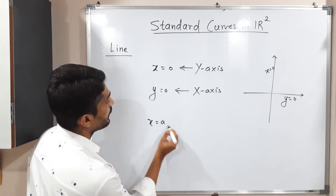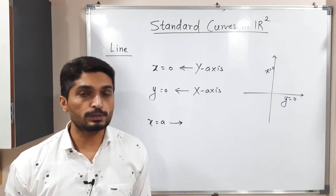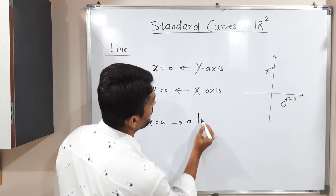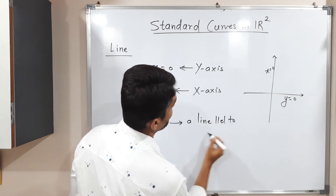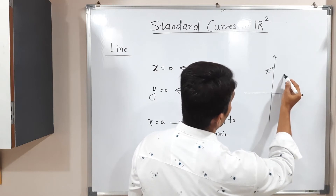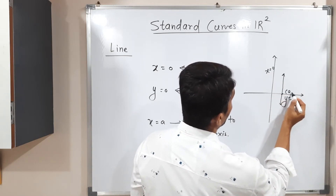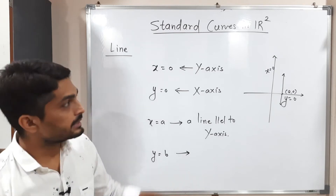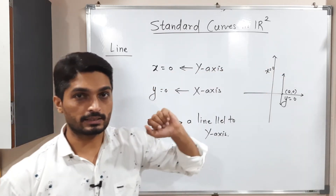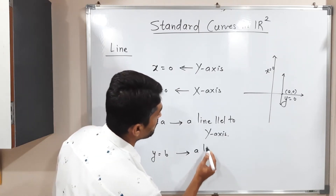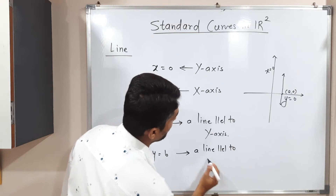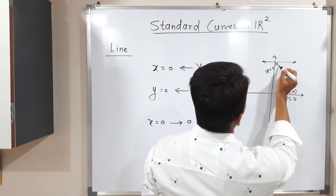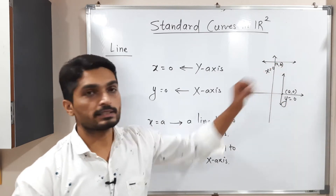Next, x is equal to a. x = a represents a line which is parallel to the y-axis, and it cuts the x-axis at point (a, 0). Next, y is equal to b. y = b is the equation of a line which is parallel to the x-axis and passes through y = b. That means this point will be (0, b). So this is y = b and this is x = a.